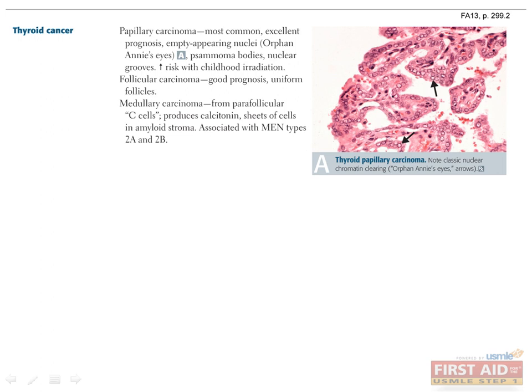Undifferentiated or anaplastic thyroid cancer is extremely rare, but it carries an abysmal prognosis and is more common in older patients. One other tumor that frequently occurs in the thyroid, though not derived from intrinsic thyroid tissue, is lymphoma. In an older patient presenting with a neck mass and signs of cancer, a differential between lymphoma and anaplastic carcinoma is often considered. Lymphoma is far more amenable to treatment and is generally associated with Hashimoto's thyroiditis.